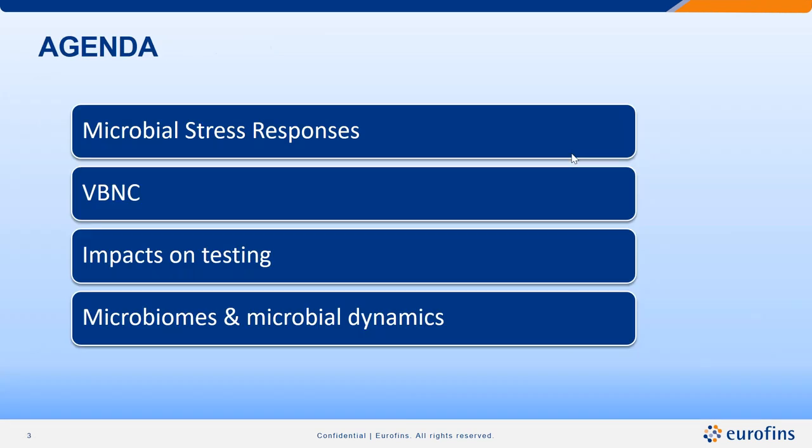Today we're going to talk about microbial stress responses — viable but not culturable, or VBNC. You may have heard this acronym in your past industry experiences. We'll cover the impacts of stress responses on your actual testing programs in the food industry, and a bit about microbiome and microbial dynamics in respect to these stress responses and how it can be a useful tool.